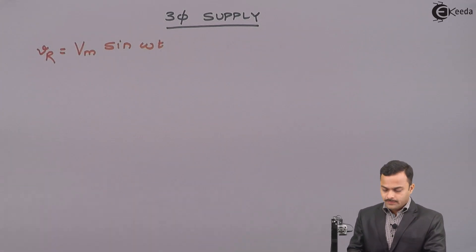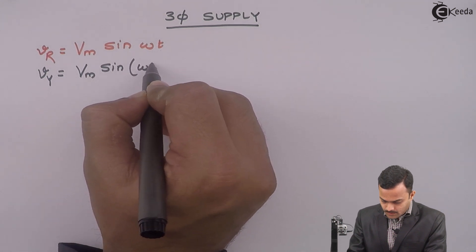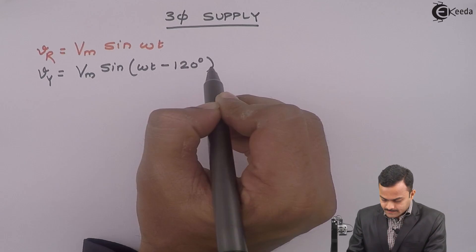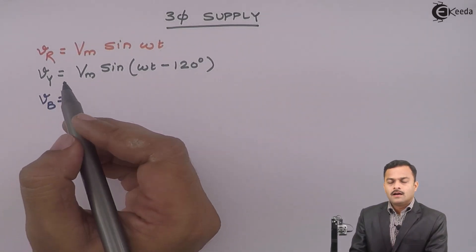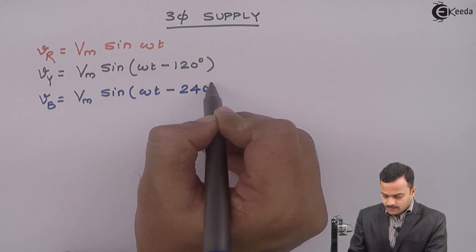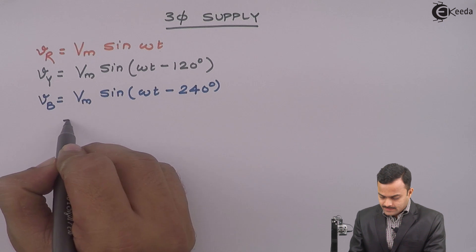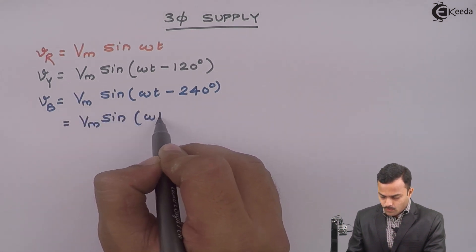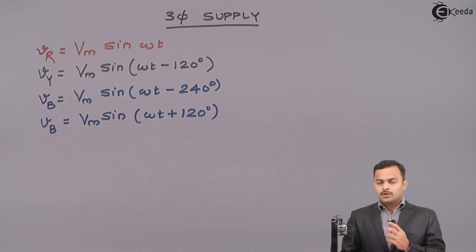Then, next voltage will be Vy and it will be lagging Vr by 120-degree. Hence, phase difference of 120-degree will be there. So it is Vm sin omega t minus 120-degree. And third voltage will be Vb and that is equal to Vm sin omega t minus 240-degree. So, if you talk in terms of angle, I can say this minus 240-degree same as plus 120-degree.